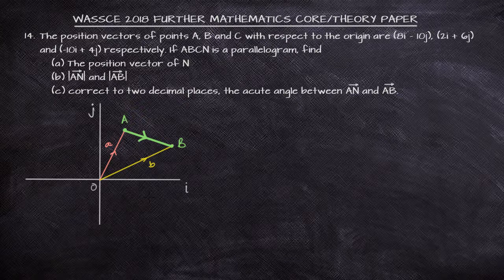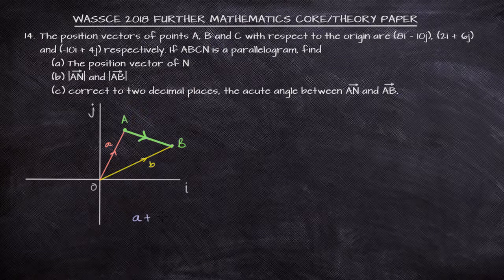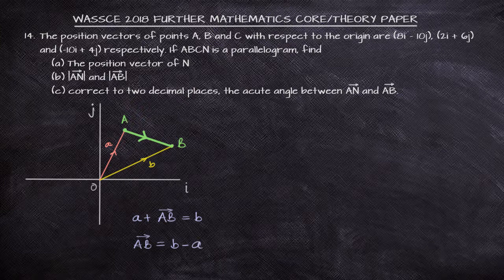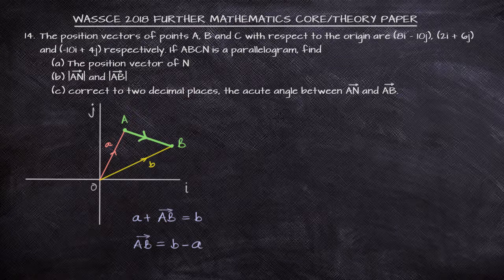Looking at point B, if you want to navigate from the origin, there are two paths. It's either we go through small letter a, then from capital A to capital B, or we go directly through small letter b. That means to get to point B, we can go through a plus AB, or we can go through b. Meaning that vector AB will be b minus a. This means vector AB is position vector B minus position vector A.